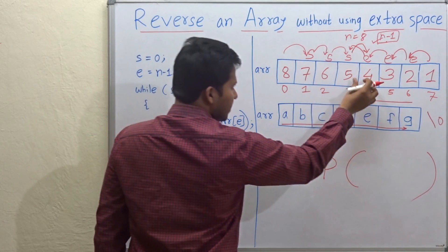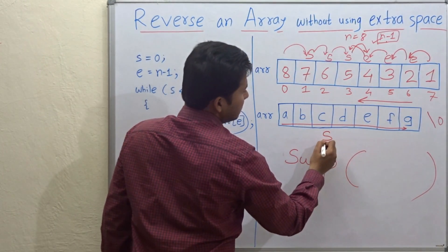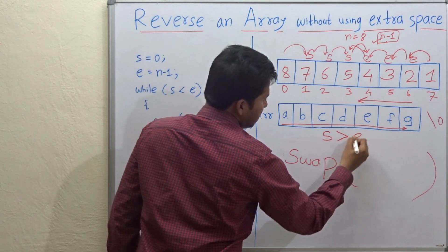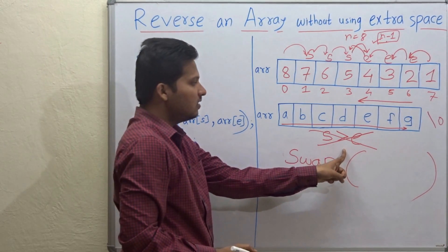So our breaking condition is that when S is greater than E, we will break the loop. We will break the code.